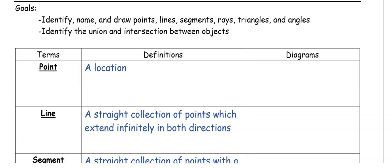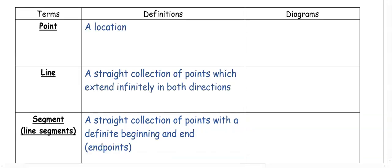First we need to get through some geometry vocabulary that will show up throughout our units and year. Our first vocab term is a point. A point is a location. Whenever you see a dot with a letter by it, that is a point, and it's going to be named by whatever letter is by the point — in this case, just A.